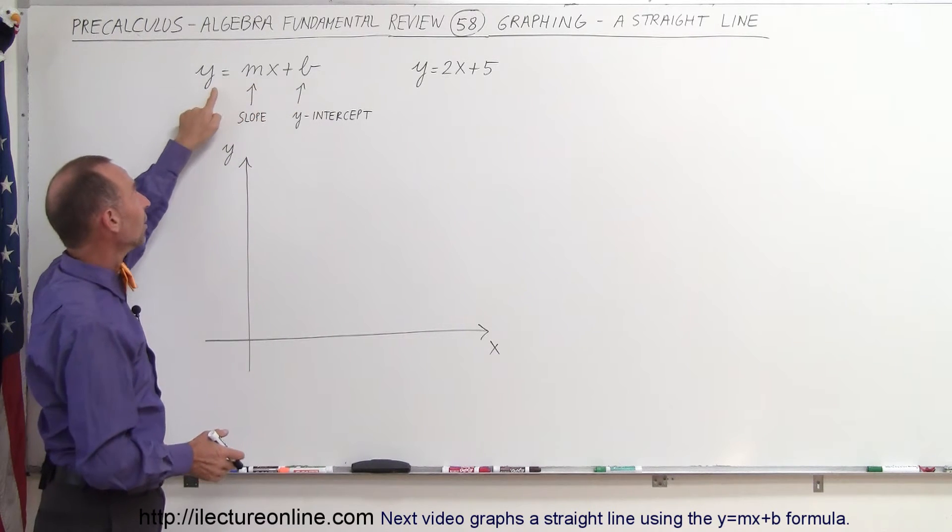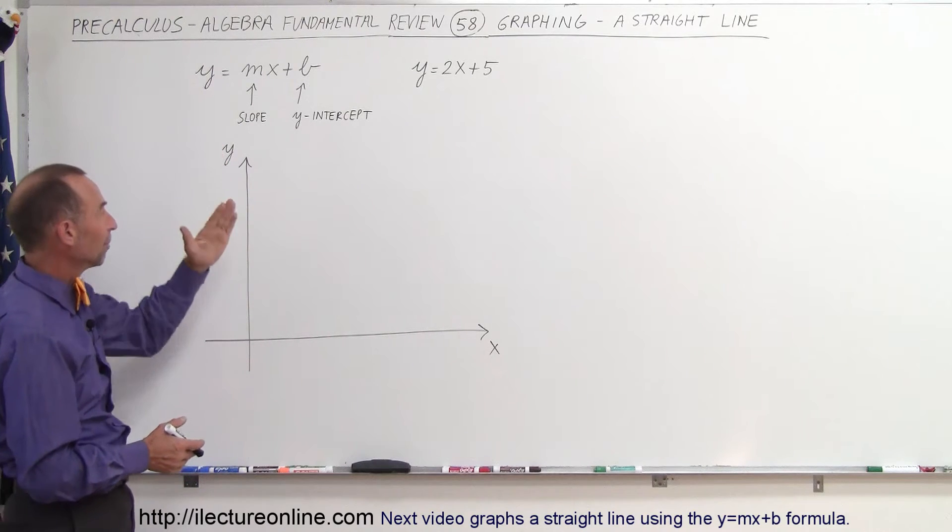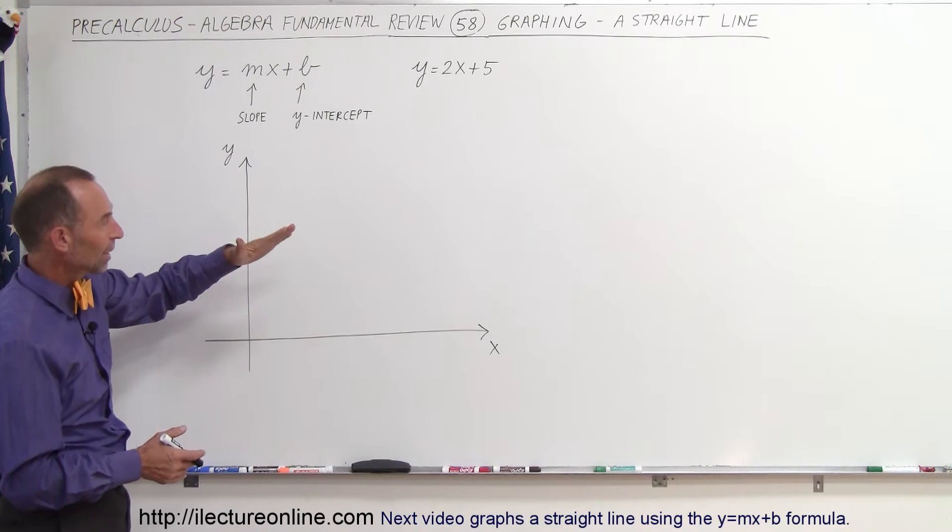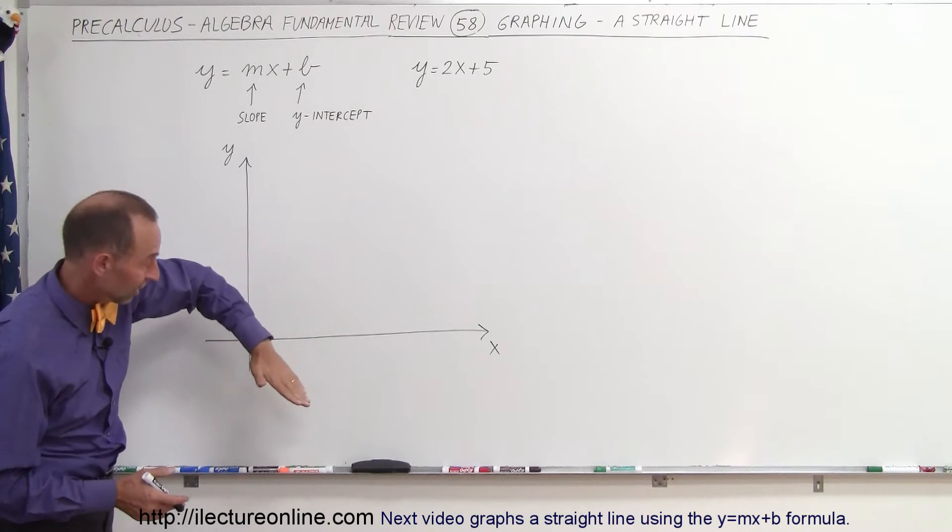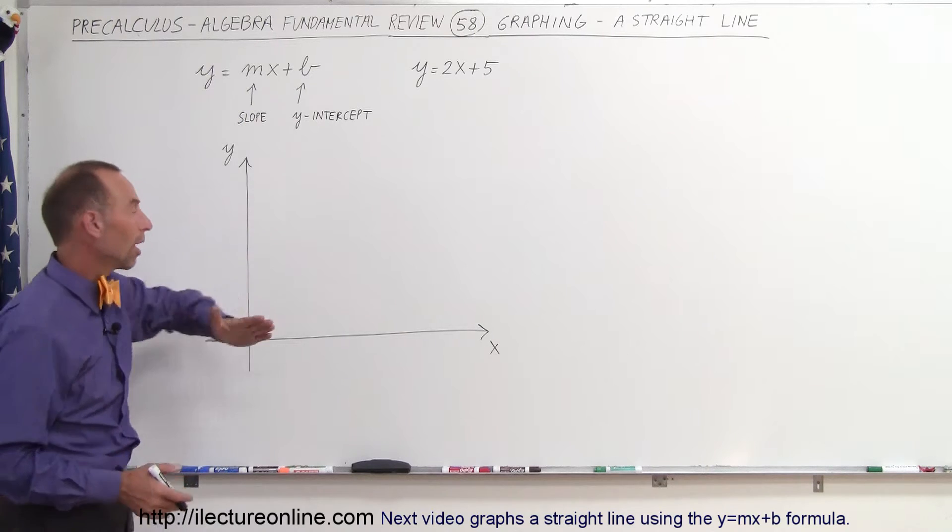A relationship between y and x. M, the number in front of x, is the slope—how steep the line is. If m is big, the line is steep. If m is not so big, it's not so steep. If m is negative, it slopes down. And b is the y-intercept, where it crosses the y-axis.